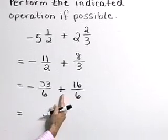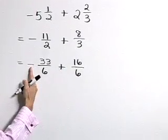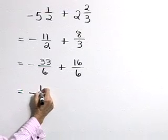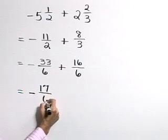We have our common denominator. Now we're ready to add. A negative 33 plus 16 is a negative 17 sixths.